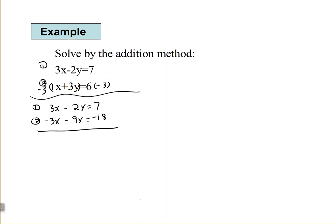So, here, we have 3x minus 3x is 0x. They eliminate negative 2y minus 9y, and then 7 minus 18.